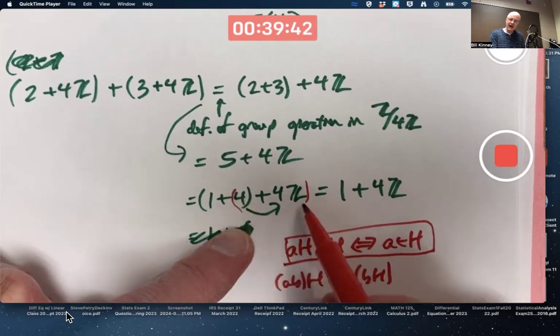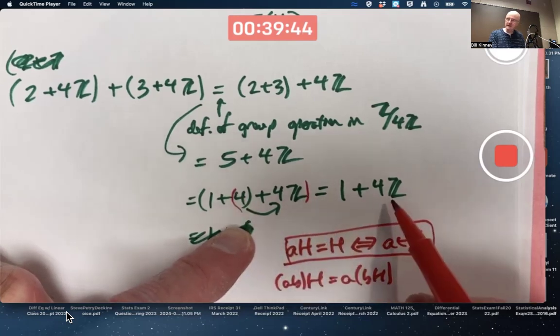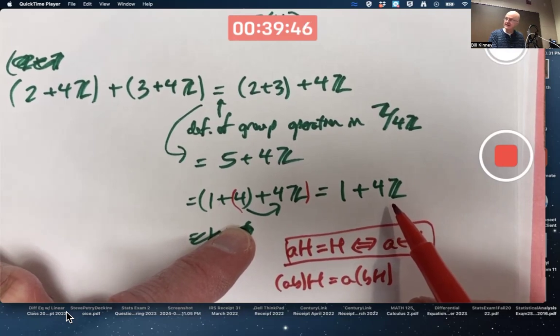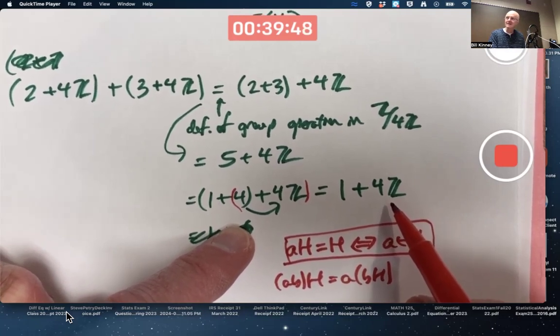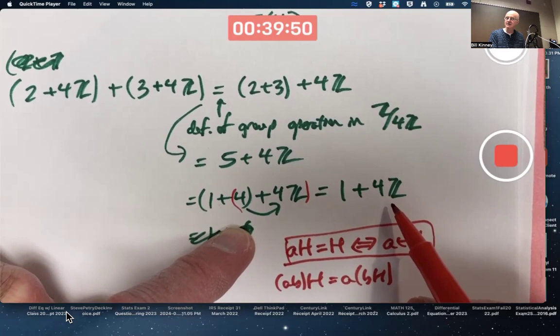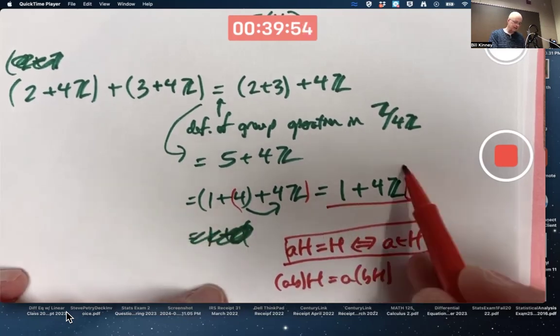4 plus 4Z, that thing right there, is the same as 4Z because 4 is in 4Z. The 4Z is the H. So it simplifies to this coset.